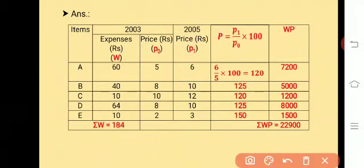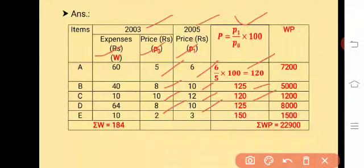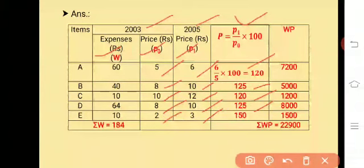In the solution, year 2003 is the base year and 2005 is the current year. Expenses are denoted by W, price in the base year by P0, and price in the current year by P1. We find price relatives: P = (P1 / P0) × 100. That gives us 6/5 × 100 = 120; 10/8 × 100 = 125; 12/10 × 100 = 120; 10/8 × 100 = 125; and 3/2 × 100 = 150.